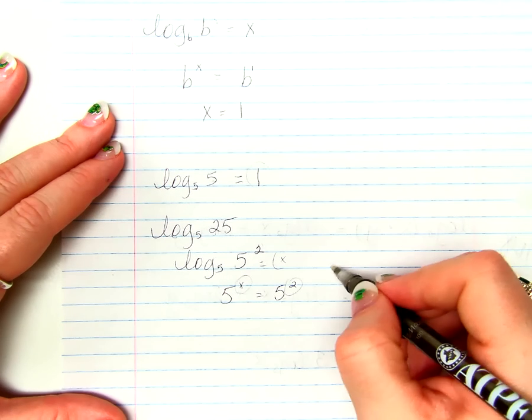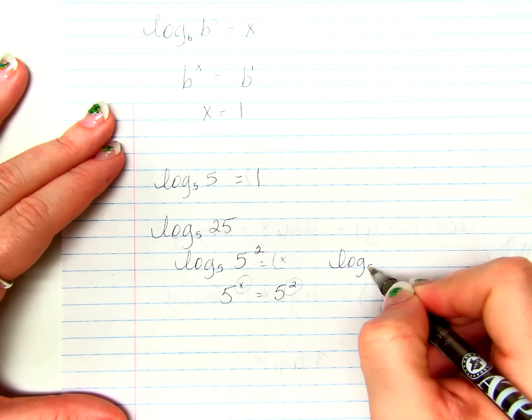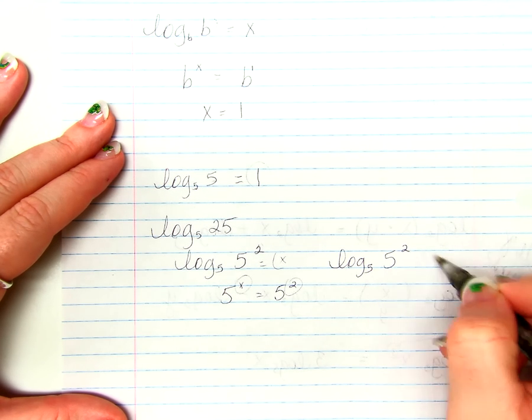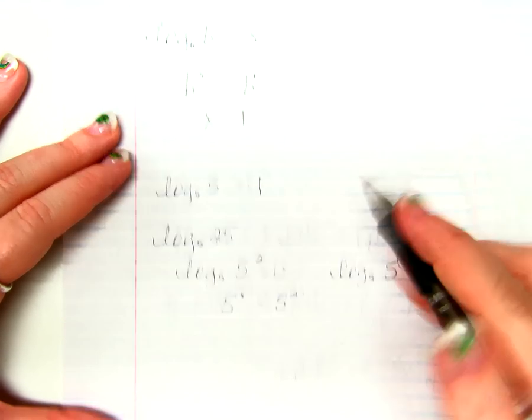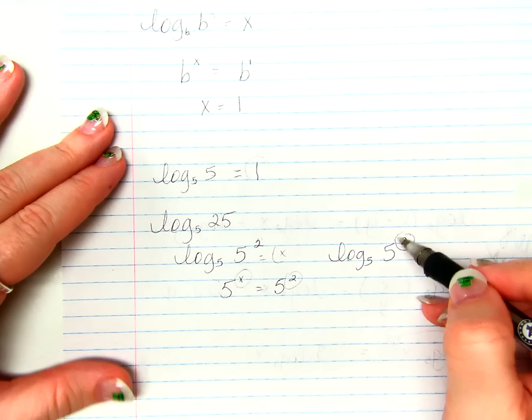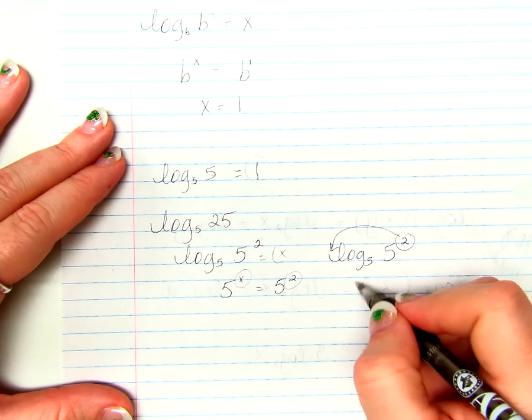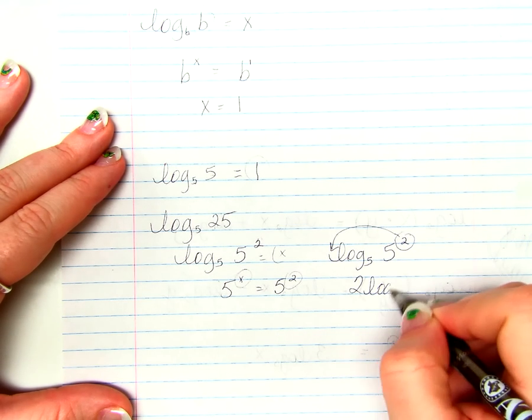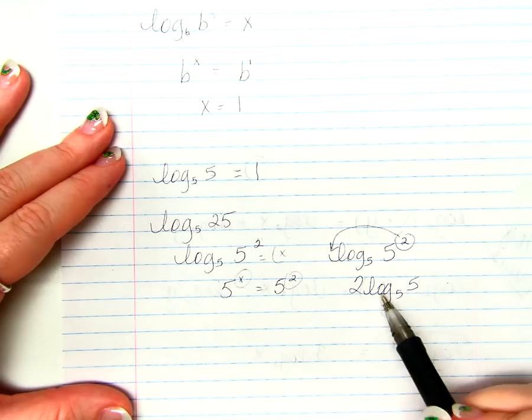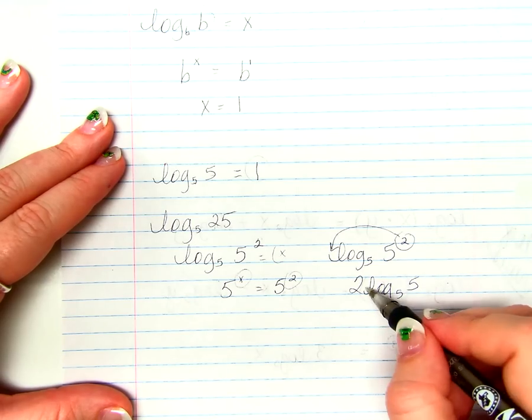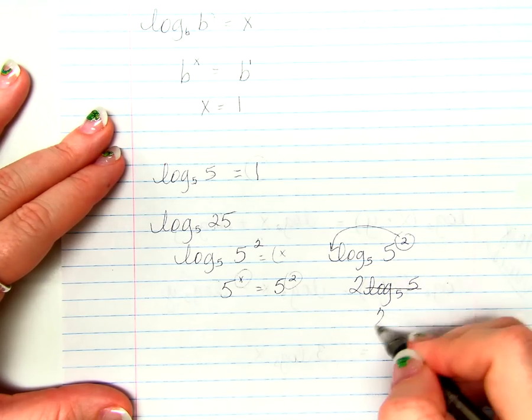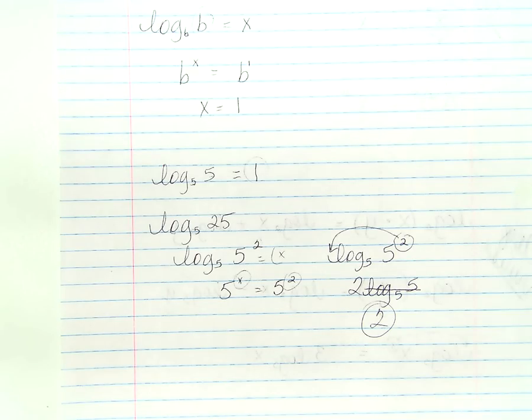So, a short way to see that then is log base 5 of 5 to the 2 power. Remember what I told you just a second ago with this rule? This exponent comes down in front as a multiplier, so it would be 2 log base 5 of 5, and we know log base 5 of 5 is 1, well what's 2 times 1? Just 2.